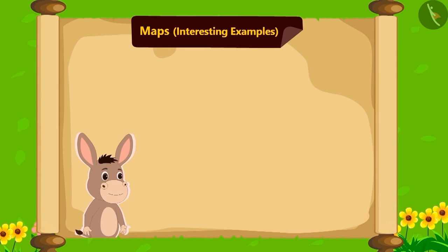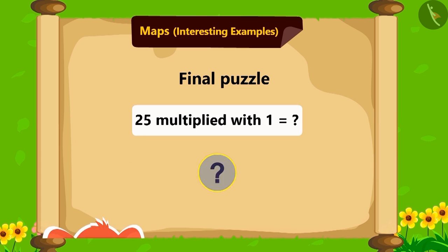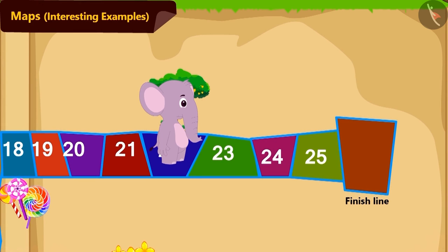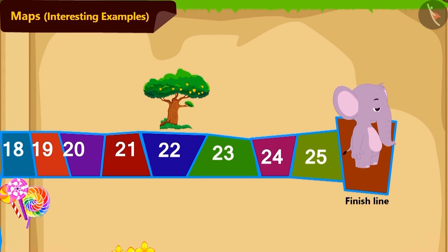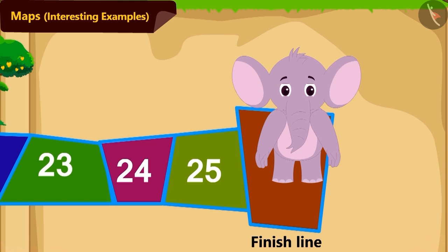Now Bhola asked his final puzzle. If you multiply 25 with 1, then what will you get? Children, do you know the answer? If we multiply any number with 1, we will get the same number. Therefore, 25 multiplied with 1 is 25. On getting this answer, Appu ran to tile number 25, reached the finish line, and started jumping happily.